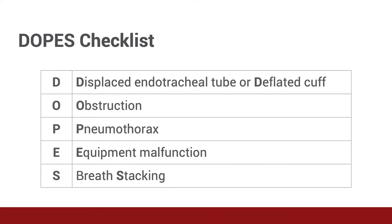As with many things in medicine, it's important to be systematic, and there's a checklist for this called the DOPS checklist, used to identify problems patients commonly encounter while on the vent. D stands for a displaced endotracheal tube or a deflated cuff. O stands for obstruction — a mucus plug or kinked tubing. P stands for pneumothorax — examine the chest and listen for bilateral breath sounds; if in doubt, perform an ultrasound or obtain an x-ray. E is equipment malfunction — assess the ventilator, tubing, and power supply. S stands for breath stacking, which can generate excessive PEEP or what we call auto-PEEP, creating problems with intrathoracic pressure.